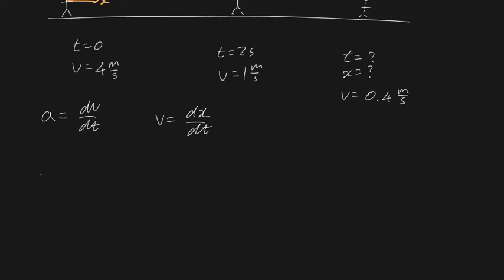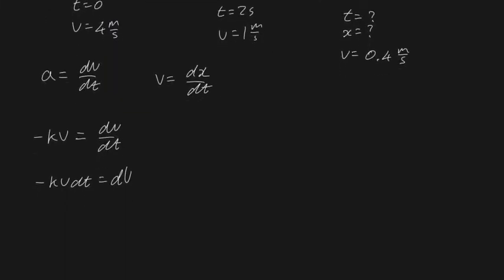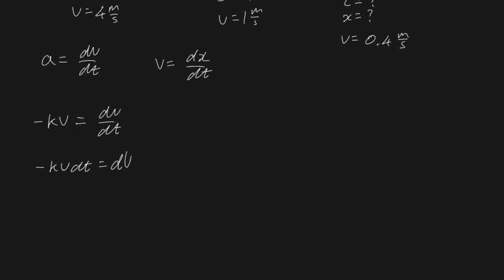We know acceleration was given as minus kv, proportional to velocity, and this equals dv/dt. Multiplying both sides by dt gives minus kv dt = dv. Dividing both sides by v gives minus k dt = (1/v) dv. Integrating both sides yields the next equation.